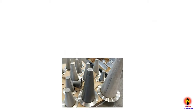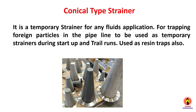Conical type strainer is a temporary strainer for any fluid application, for trapping foreign particles in the pipeline. It is used as a temporary strainer during startup and trial runs, and can also be used as a resin trap.